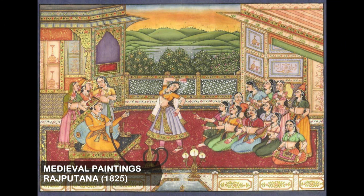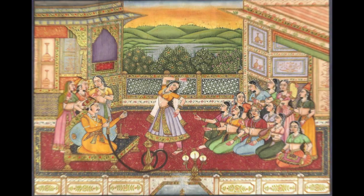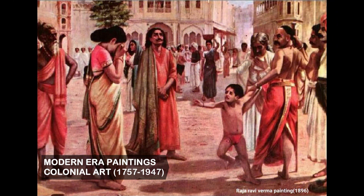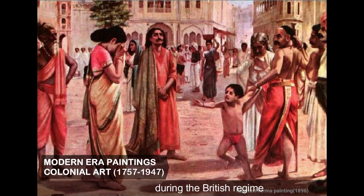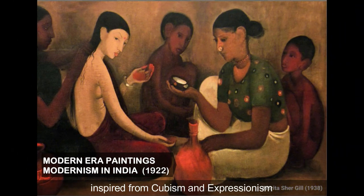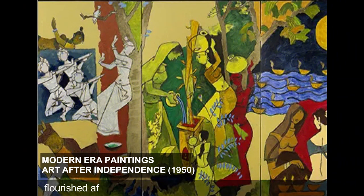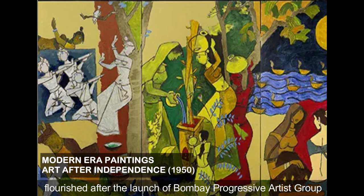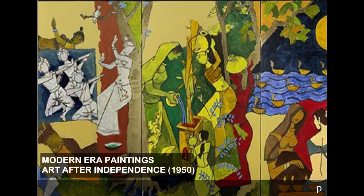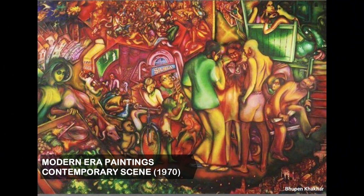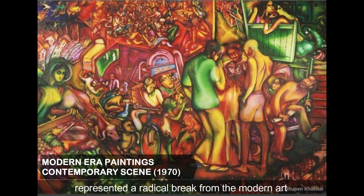Rajputana paintings from Jaipur and Rajasthan province, colonial art which came during the British regime, and modern art in Calcutta inspired from cubism and expressionism. Art after independence flourished after the launch of the Bombay Progressive Artists' Group. Contemporary art represented a radical break from modern art.